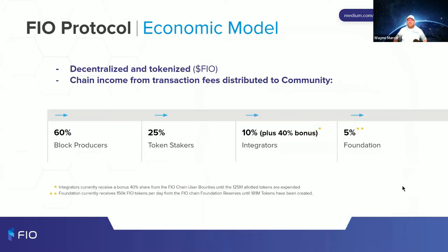Our economic model is decentralized and tokenized. All chain income comes from transaction fees distributed to the community: 60% goes to block producers, 25% to token stakers, 10% to integrators plus a potential bonus, and 5% goes to the foundation to continue developing the FIO ecosystem.